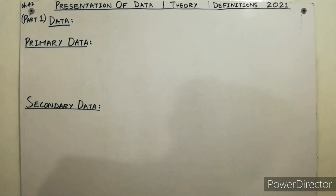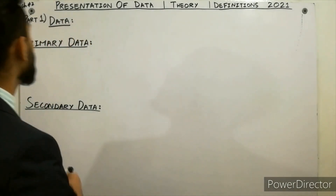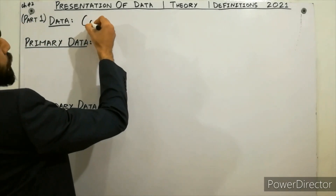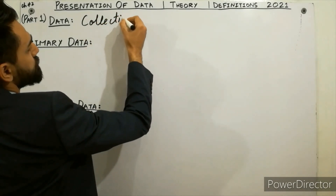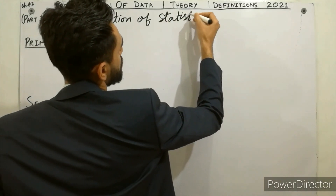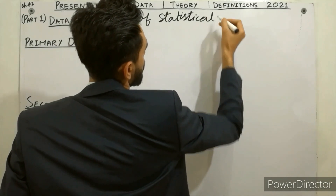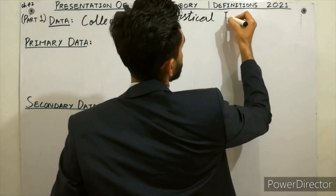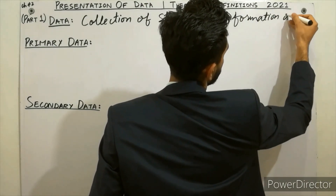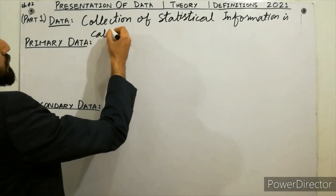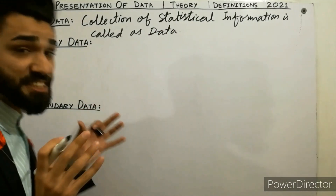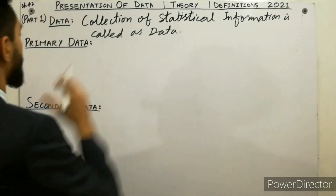Primary data and secondary data — follow these test points. What is the definition of data? Collection of statistical information is called as data. Must remember that the statistical information collection is called as data.